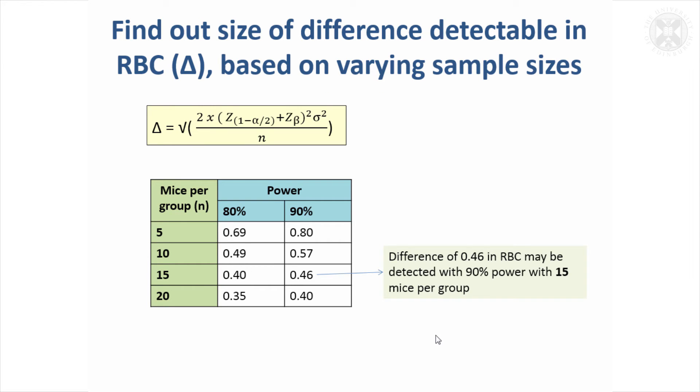Thinking about looking at different scenarios and different sizes of data set, instead of getting the power you can say, well for a given amount of power, what sort of difference am I likely to detect? Here we're calculating the difference in red blood cell count that could be obtained with different numbers of mice per group. With 80% power, the difference is quite high with just five mice. We can't detect the 0.5, but we could detect 0.69.